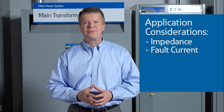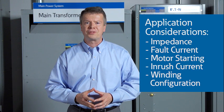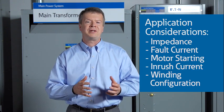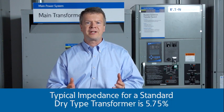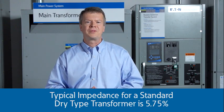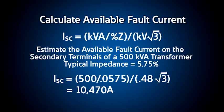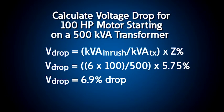From an application standpoint, there are many things to consider when evaluating transformers. Transformer impedance is important for estimating the available fault current as well as the voltage drop during motor starting. Typical impedance for a standard power transformer is 5.75%. You can estimate the available fault current using the kVA rating and impedance. For this example, the estimated fault current on the secondary terminals of this 500 kVA transformer is 10,470 amps. For motor starting, you can estimate the voltage drop at the motor by dividing the inrush kVA of the motor by the transformer kVA and then multiplying by the impedance. Both of these calculations are estimates, but will give you a reasonable answer for a first step in your analysis.